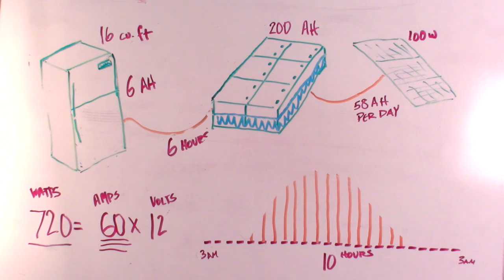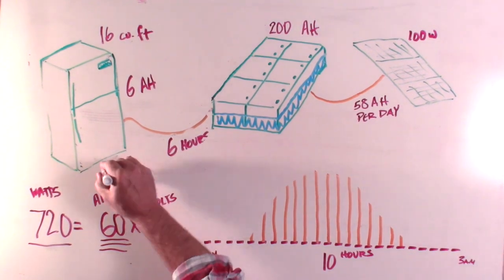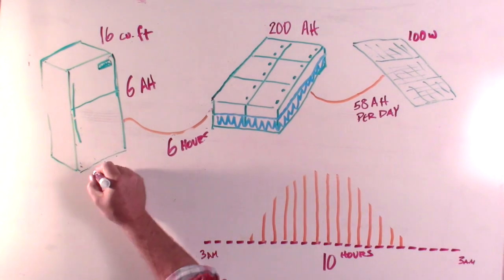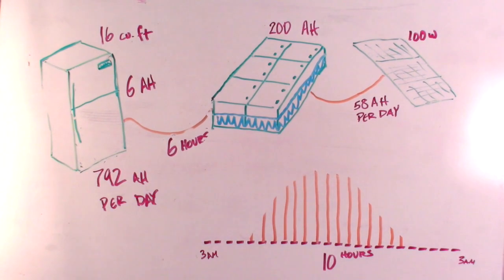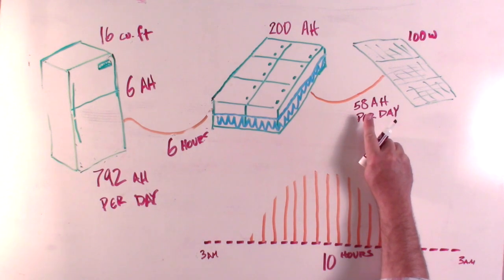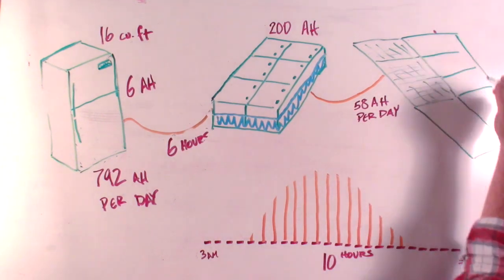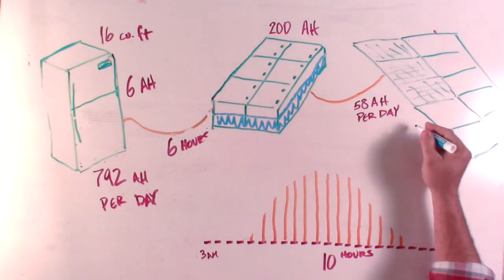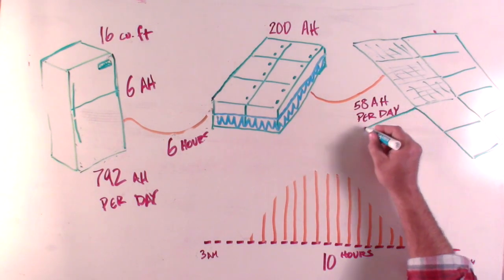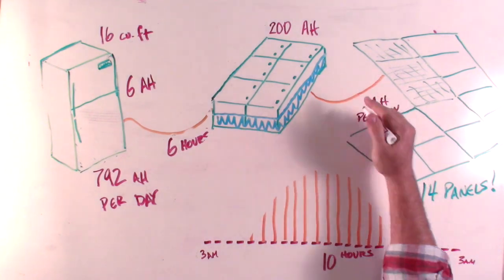So one single 100 watt panel with 10 peak sunlight hours will produce about 58 amp hours of energy in a day. Wait, how many amp hours does that refrigerator consume? 66 per hour? 33 if it's running only half the time? Even at half the time, that's 792 amp hours per day. So 792 divided by 58 is about 14 panels. You'll need 14 solar panels to run one residential refrigerator and nothing else. On most rigs, you can't even fit that many up there. You'd need to pull a trailer covered in solar panels so that you could run that fridge and still nothing else.